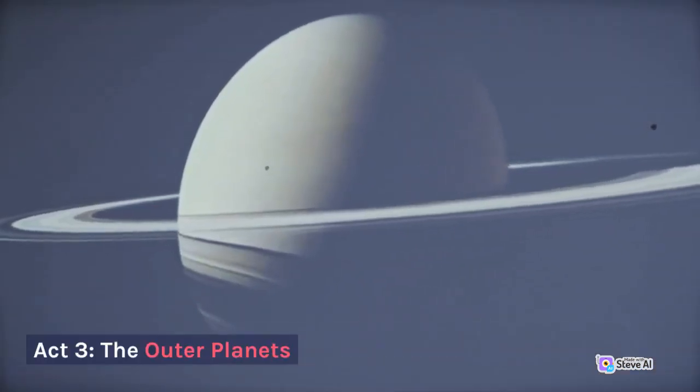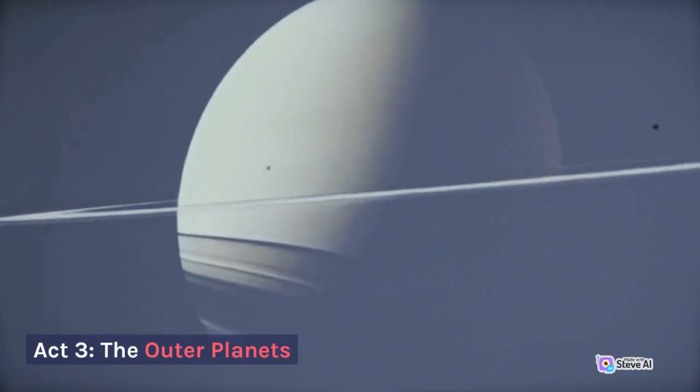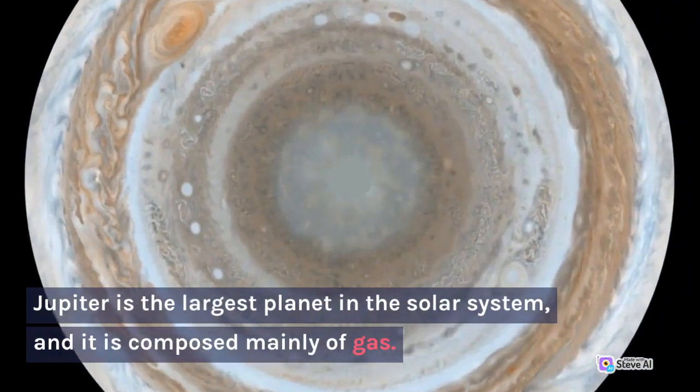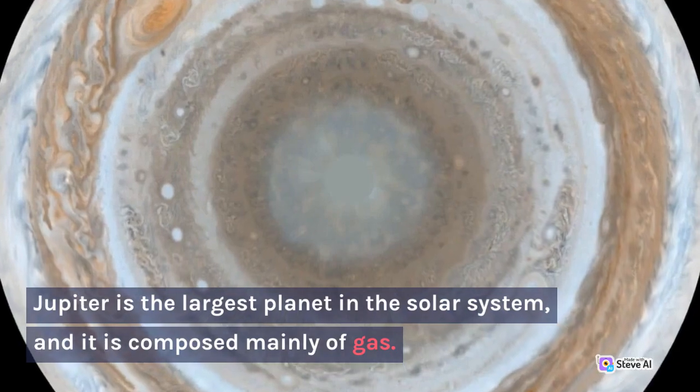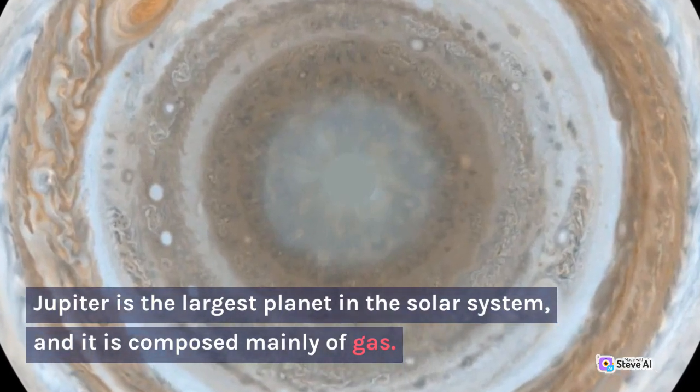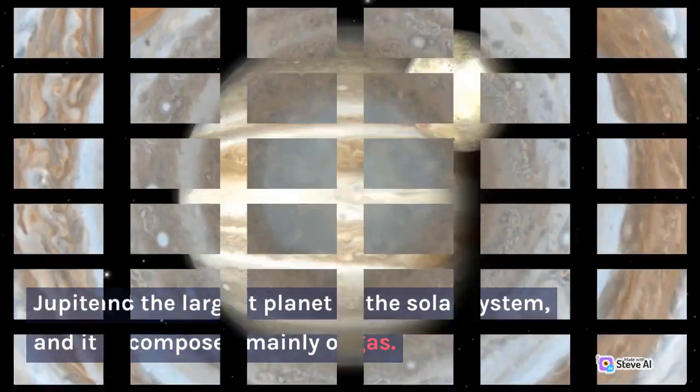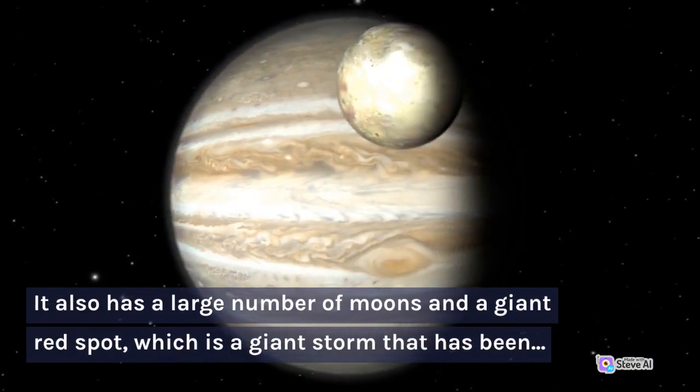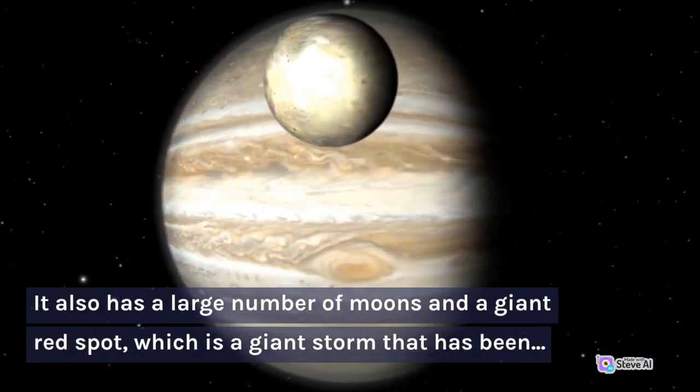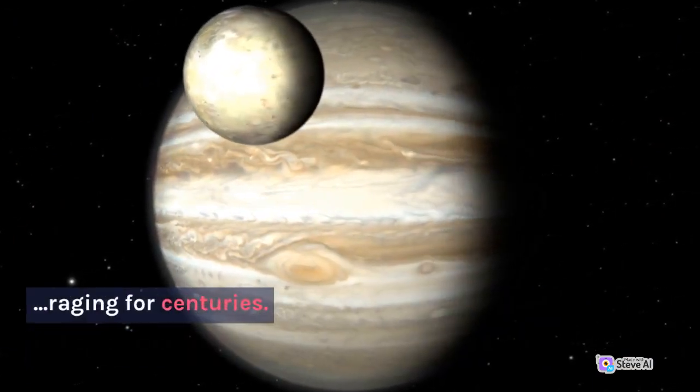Act 3 The Outer Planets. Jupiter is the largest planet in the solar system and it is composed mainly of gas. It also has a large number of moons and a giant red spot, which is a giant storm that has been raging for centuries.